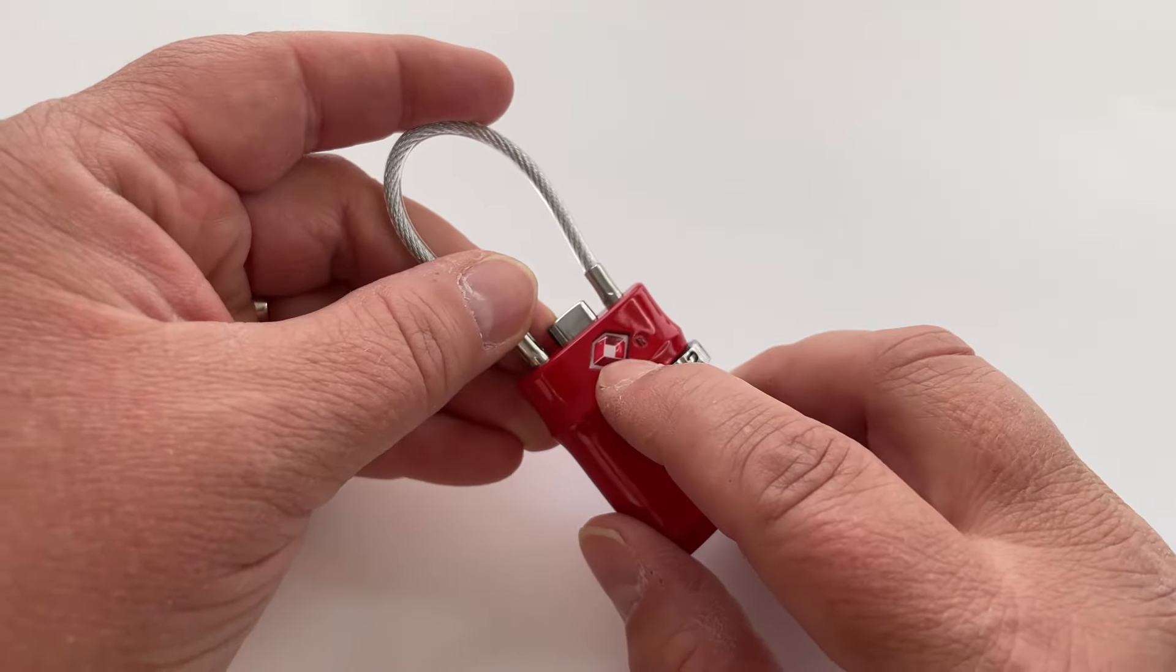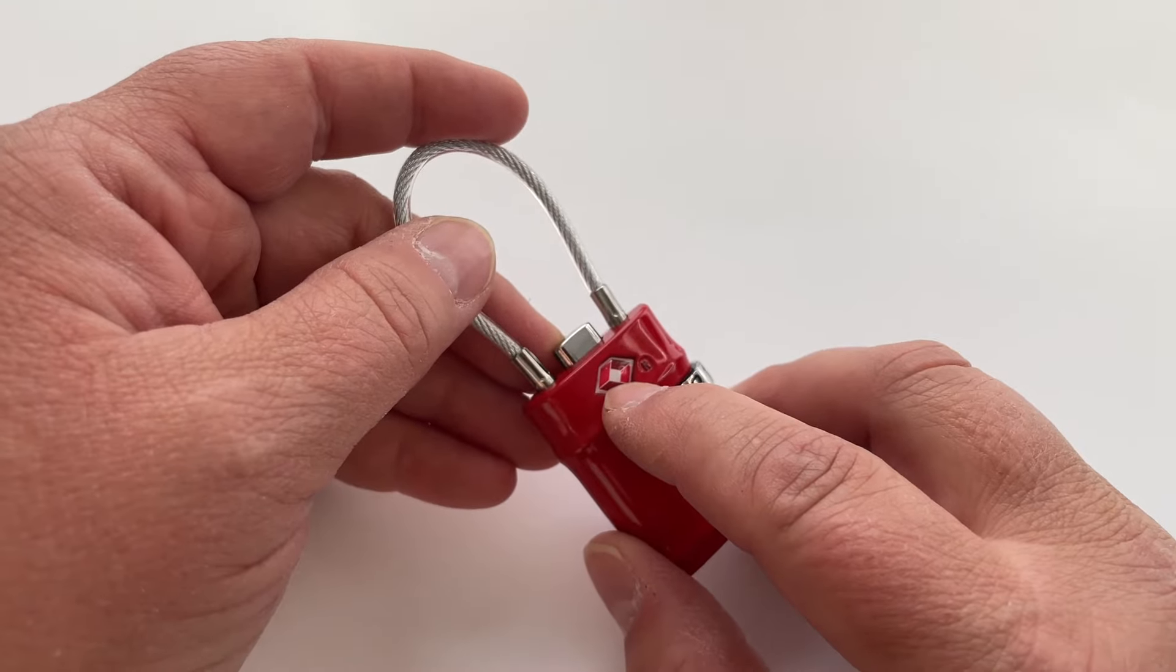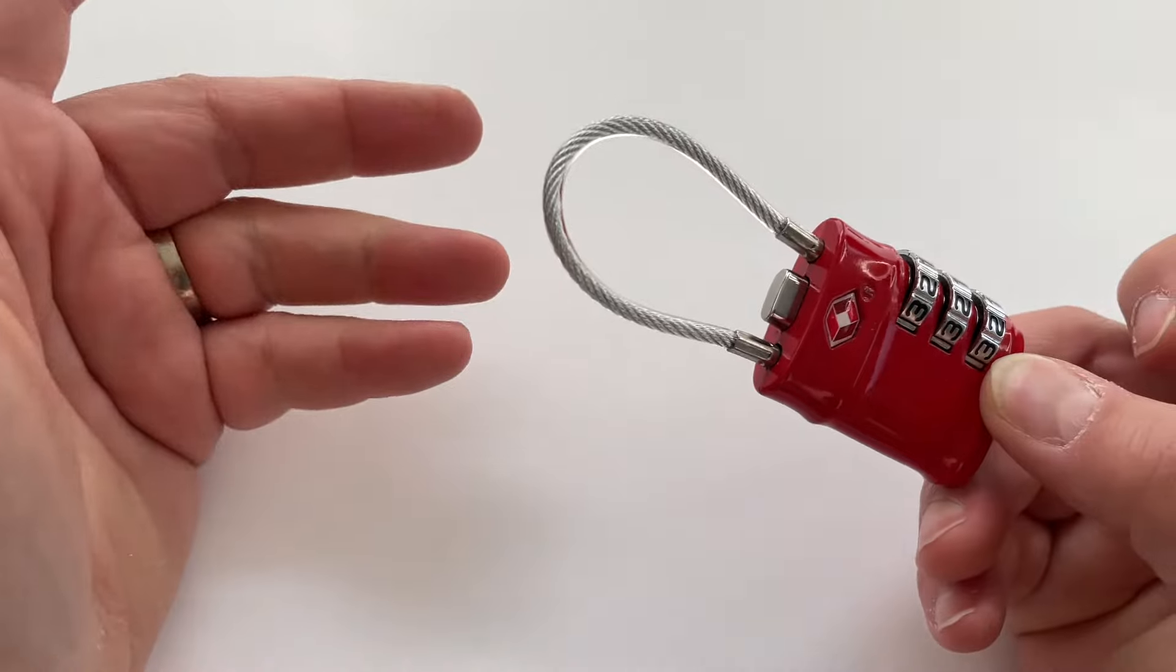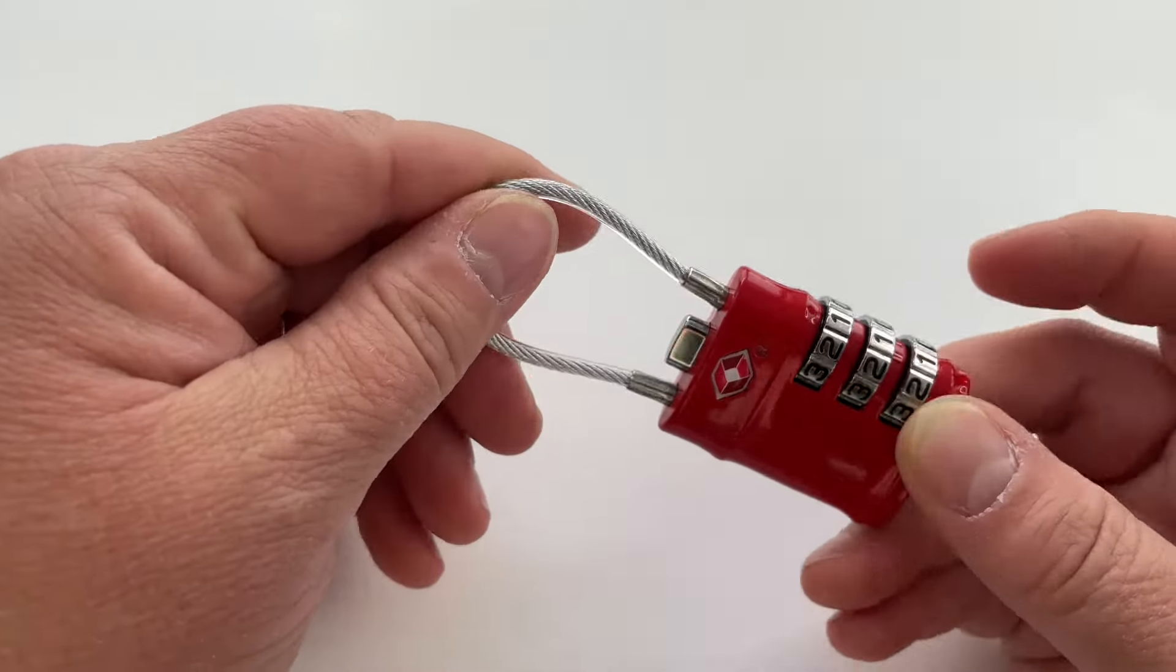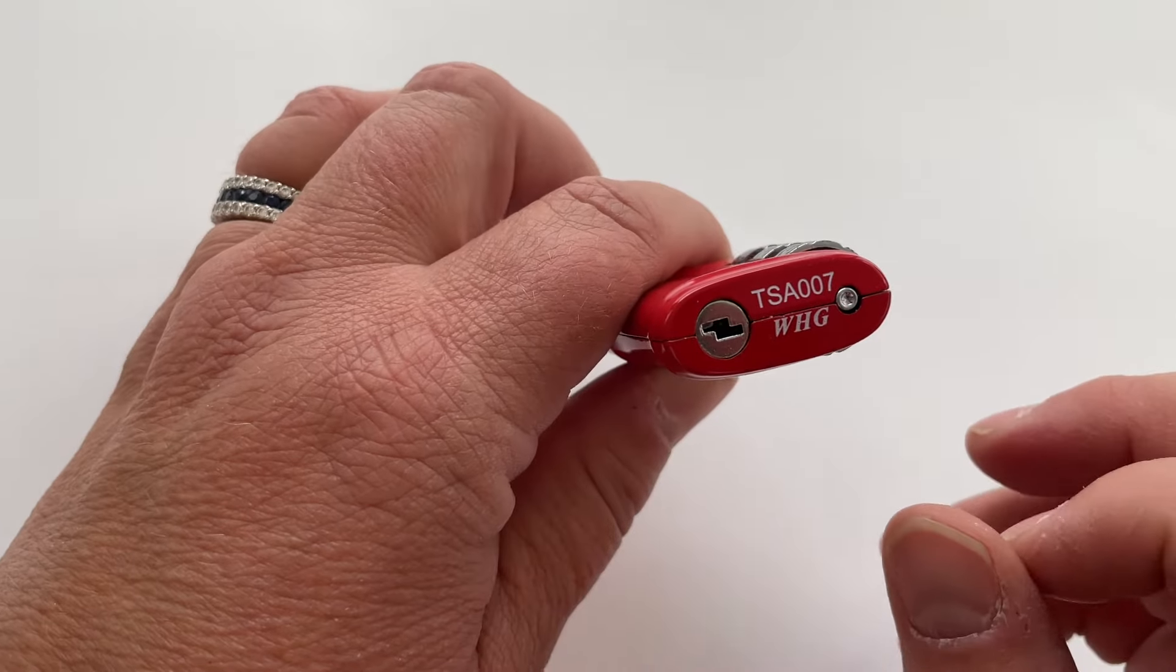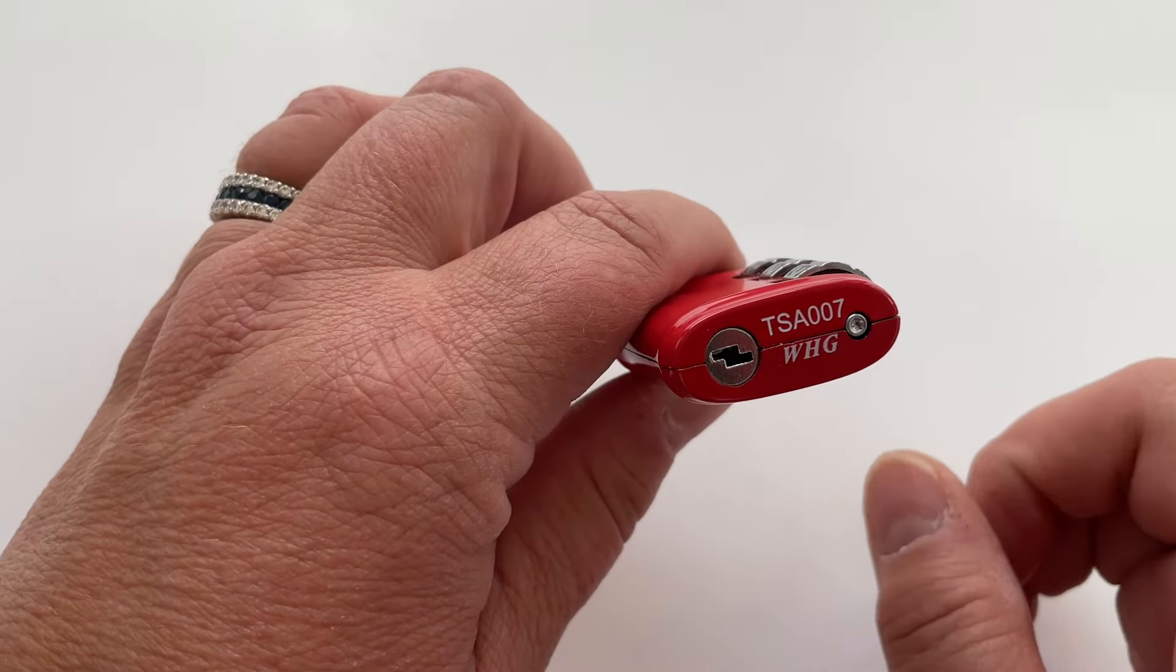This little symbol right here shows that it's TSA approved, meaning if you have this on your bag and they need to open it but you're not there, they'll use the corresponding TSA 007 key and won't have to cut or break your lock.